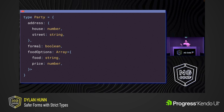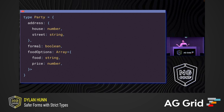In general, every form corresponds to a data schema, or the shape of your data. This is a TypeScript type corresponding to information about a party. It has inner objects — in this case the address field — and inner arrays, like the menu. It's not actually ever required to explicitly declare this schema, but it can be a good practice.